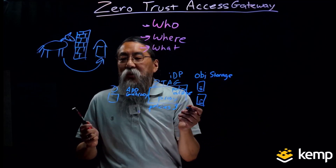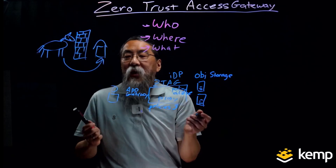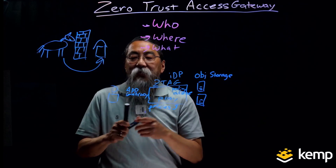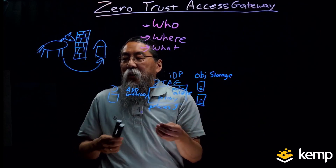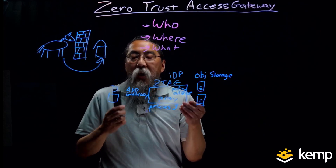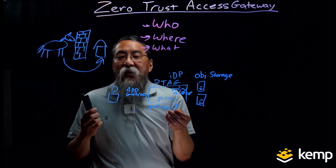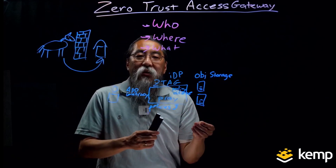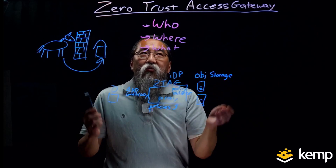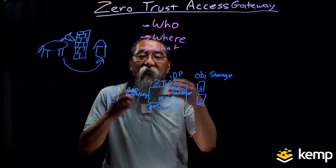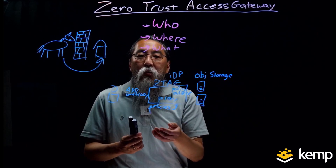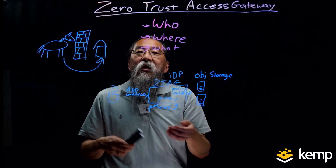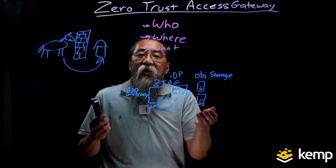Kemp's Zero Trust architecture provides unique value through native application-centric proxy capabilities. It integrates identity access management combined with intelligent policy application to enable strong controls for application and service access. With active network participation, it enables proactive application of the Zero Trust policy. Hopefully this quick overview of a Zero Trust Access Gateway and how it fits into your Zero Trust security model was useful and can help you understand how to implement Zero Trust access gateways in your architecture.